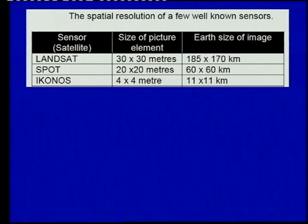If we look at the Landsat satellites, the Spot satellite, and the Ikonos satellite — these are three examples of well-known satellite sensors. Looking at the middle column, we see the pixel size for Landsat is 30 meters by 30 meters. Each pixel represents 30 meters by 30 meters on the Earth's surface, compared with the Ikonos satellite where the pixel size is 4 meters by 4 meters.